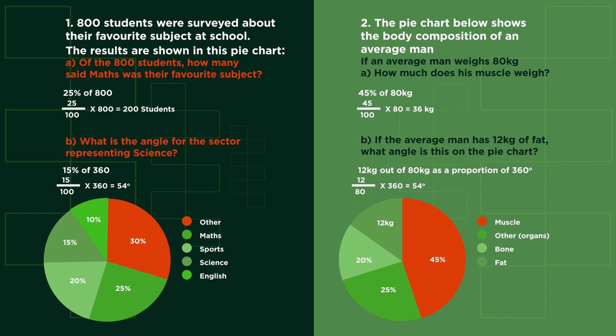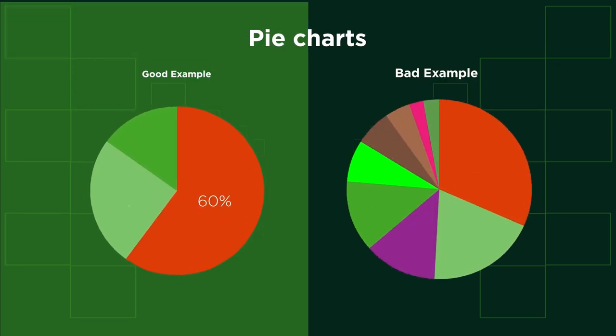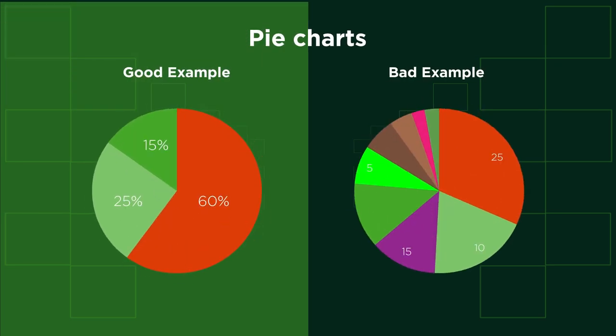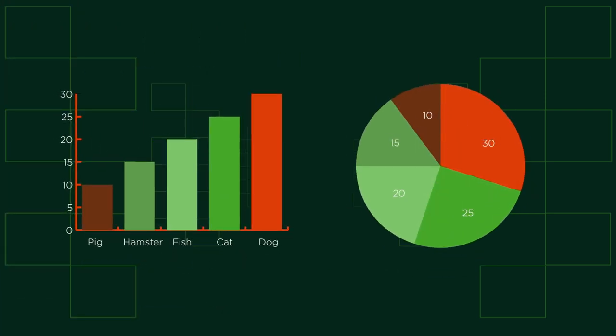That's all there is for pie charts. We need to carefully choose when to use them to make sure that they do actually show differences in the data. Most people find data much easier to understand when it's given to them visually, like with bar graphs and pie charts.